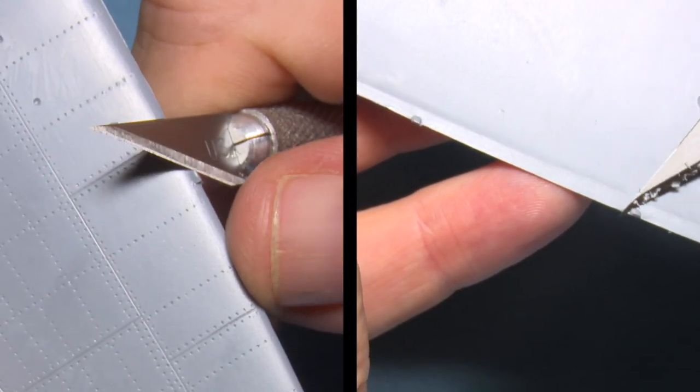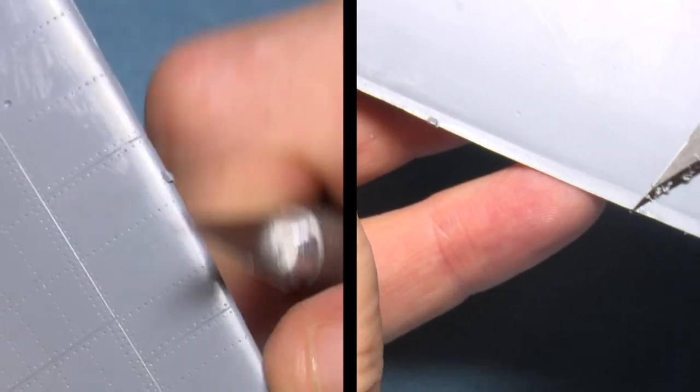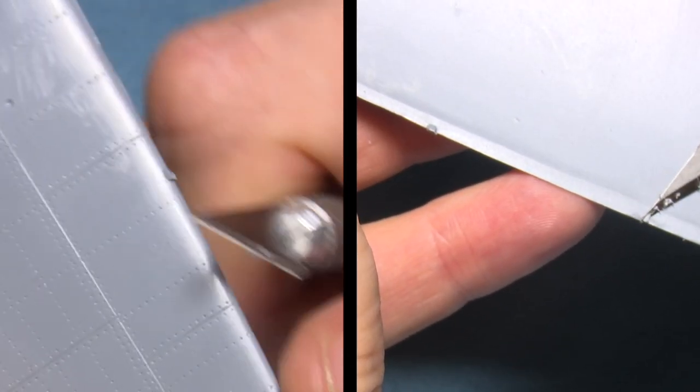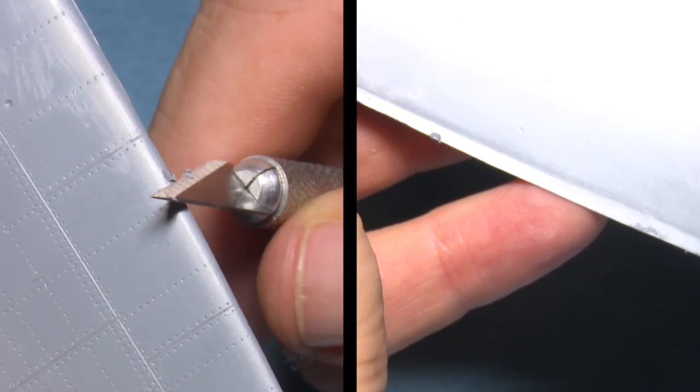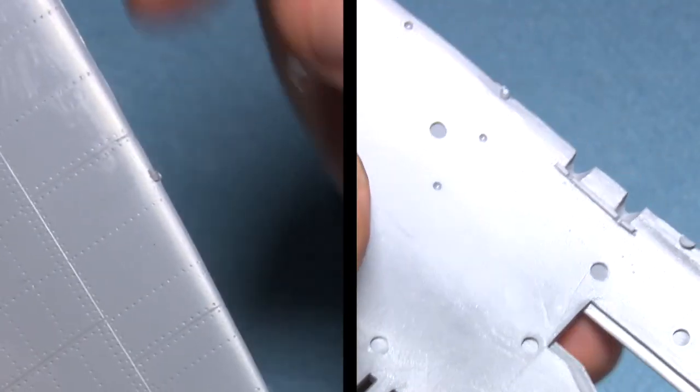To remove the little stub, get a sharp blade, preferably a new one, and start chipping away at the little stub. Do it from both ends, don't just do it from the one side.